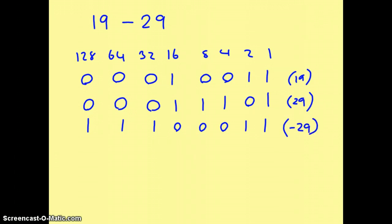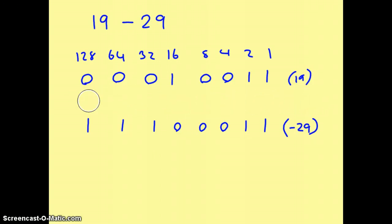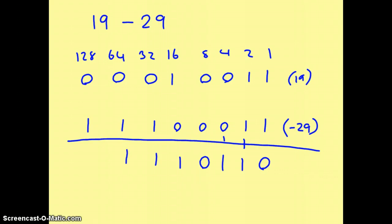Like I said before, we can then remove the positive 29 line, we've only done that in order to work out minus 29, and add the two together. 1 plus 1 gives us 0, carry 1. 1 plus 1 plus 1 gives us 1, carry the 1. 0 plus 0 plus 1 gives us 1. 0 plus 0, 0. 1 plus 0, 1. 0 plus 1, 1. 0 plus 1 is 1.